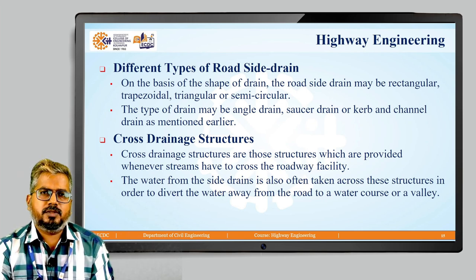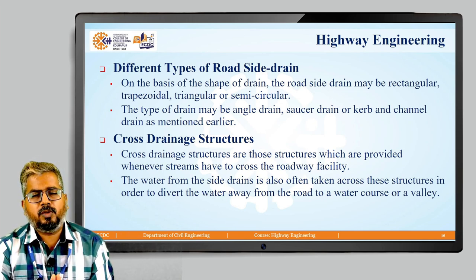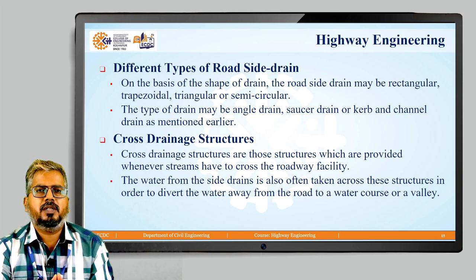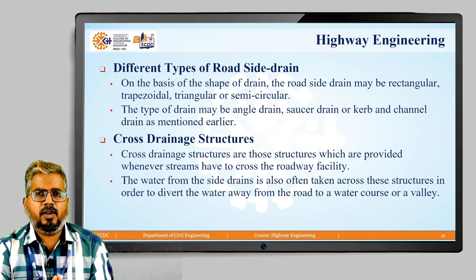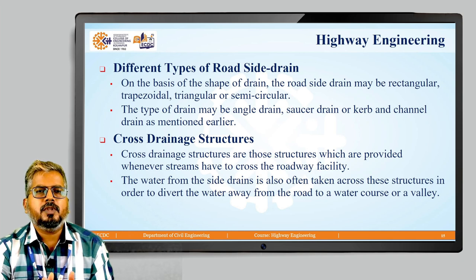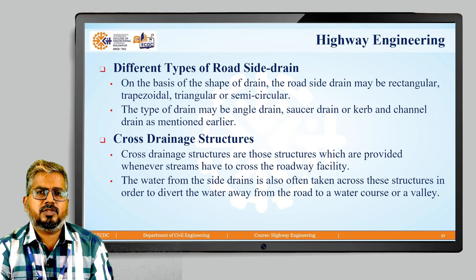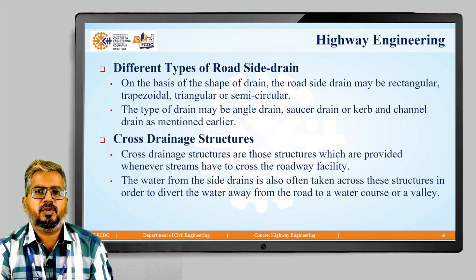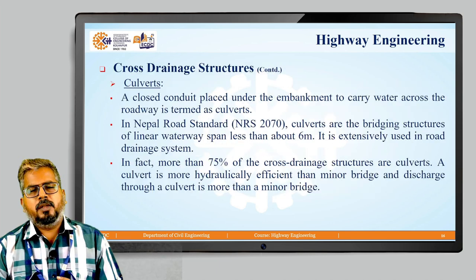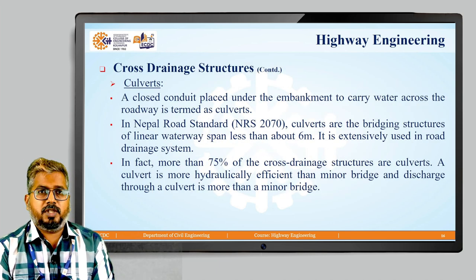Different types of roadside drains: on the basis of the shape of the drain, the roadside drain may be rectangular, trapezoidal, triangular, or semi-circular. The type of drain may be angle drain, saucer drain, or curb and channel drain. Cross drainage structures are the structures which are provided wherever the streams have to cross a roadway facility. The water from the side drains is also often taken across these structures to divert the waterway from the road to a water course or a valley.